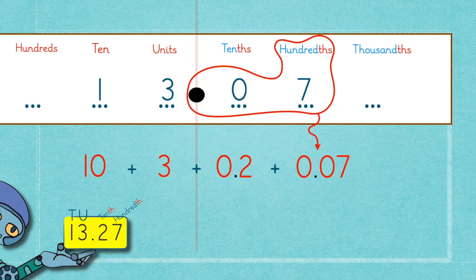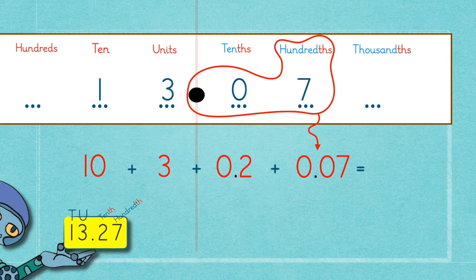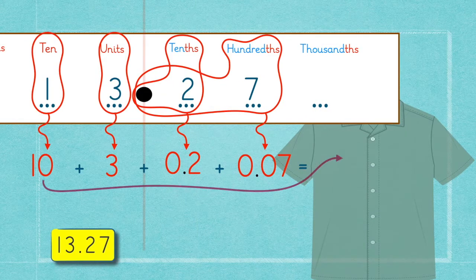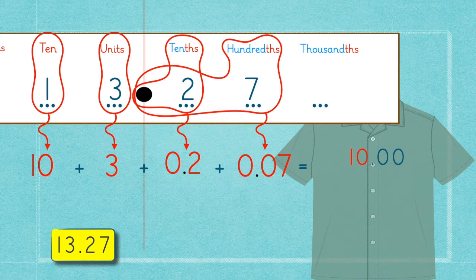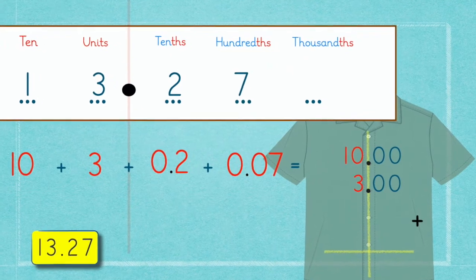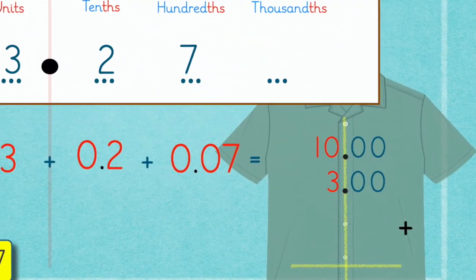Now, when adding whole numbers to decimal ones, you should include their decimal points too. Here, 10 will be written as 10.00 and 3 will be written as 3.00.